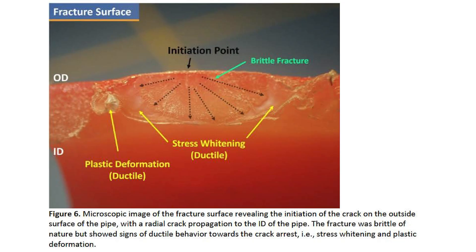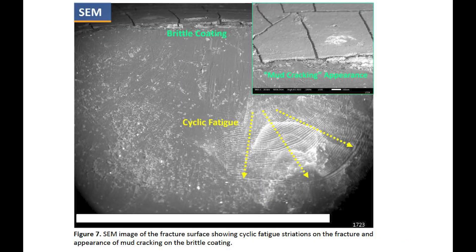The fracture was brittle in nature but showed signs of ductile behavior towards crack arrest, that is, stress whitening and plastic deformation. Figure seven: SEM image of the fracture surface showing cyclic fatigue striations on the fracture surface and the appearance of mud cracking on the brittle coating.